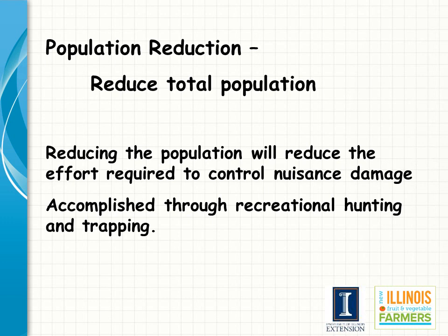Many of the wildlife species that cause conflicts for fruit and vegetable growers are game species in Illinois. One strategy to reduce the population is to harvest animals during the hunting and trapping season. If your family doesn't participate in these activities, you may consider offering this opportunity to friends or others in your community. Hunting and trapping can reduce the population to levels more sustainable to their natural food resources, which may help reduce damage to your crop. Hunting also changes the behavior of wildlife by causing animals to avoid portions of your farm, making it a great tool for your integrated pest management program.